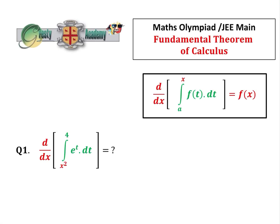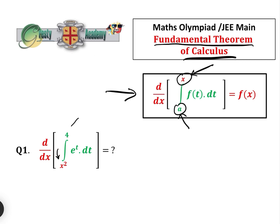This is the second video on the Fundamental Theorem of Calculus. In the first video we looked at d/dx of the integral between a and x of f(t) dt equals f(x). In this video we are going to expand on that, because one of the restrictions in the first video was that the upper limit has to be x and the lower limit has to be a constant. So what happens if x is at the bottom instead of the top, or if the limit is some function of x rather than x itself?